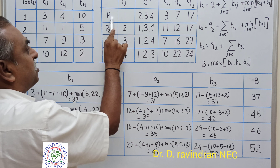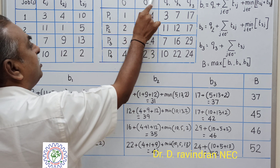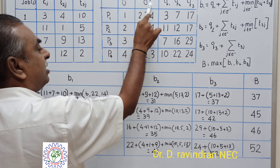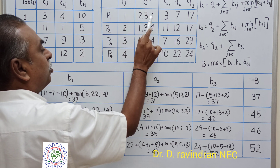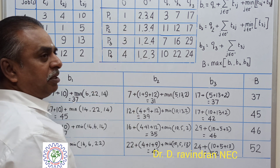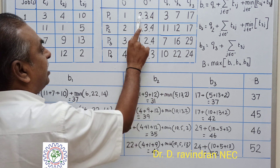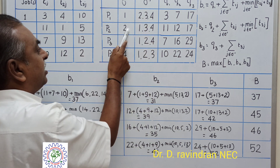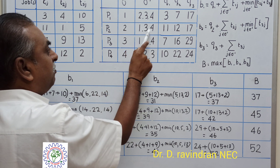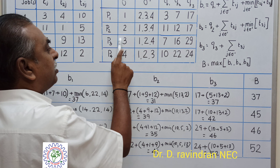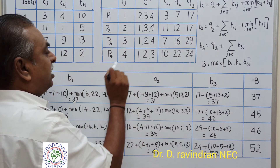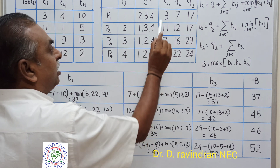Here in the first stage, if job one is processed first, the partial sequence is {1} and the remaining sequence will be {2, 3, 4}. Similarly, if job two is processed first, jobs {1, 3, 4} remain. If job three is processed first, jobs {1, 2, 4} remain.